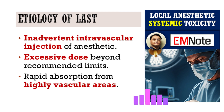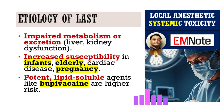Local anesthetic systemic toxicity occurs when a toxic amount of local anesthetic enters the systemic circulation. Several mechanisms contribute to this event. Inadvertent intravascular injection during regional anesthesia procedures is a frequent cause, particularly in highly vascular regions. Administration of a local anesthetic dose exceeding the recommended maximum also increases risk. Rapid systemic absorption can occur from highly vascular injection sites even when doses appear appropriate. Impaired metabolism or excretion due to hepatic or renal dysfunction leads to drug accumulation and toxicity.